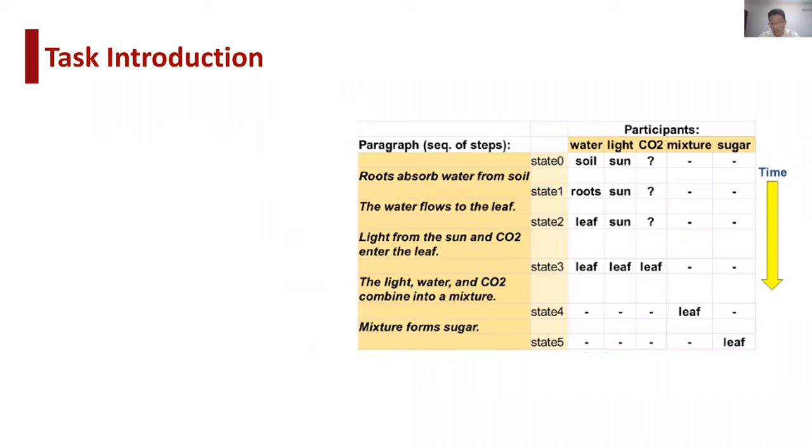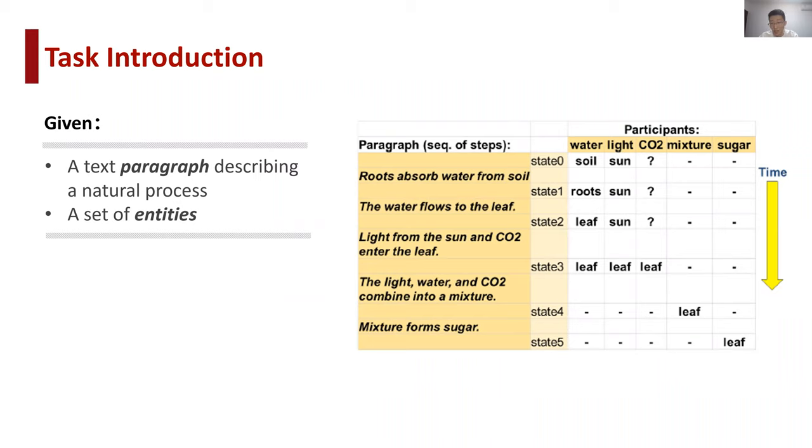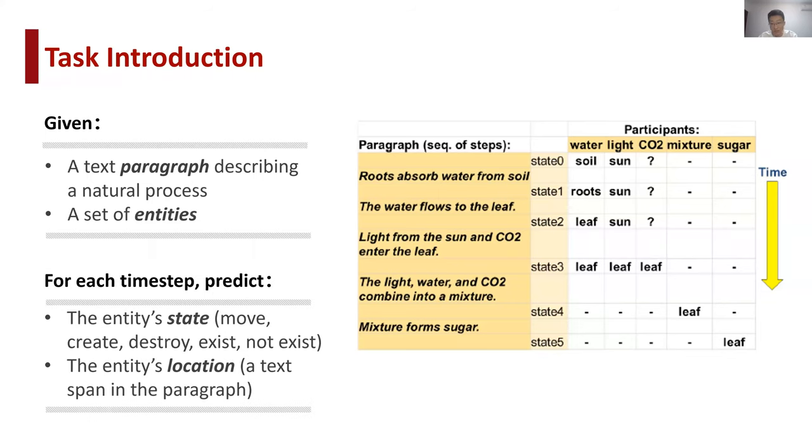The task of procedural text understanding is defined as follows: given a text paragraph describing a natural process and a set of entities, the AI model is expected to predict the entity's state and location at each step during the process. Entity states include move, create, destroy, exist, and non-exist. Entity locations are text spans in the paragraph. Understanding such procedural text requires AI models to track the participating entities within a changing world. Here is an example on the right. During the process of photosynthesis, the model should predict the location changes from step 0 to step 5 of each entity: water, light, carbon dioxide, etc.